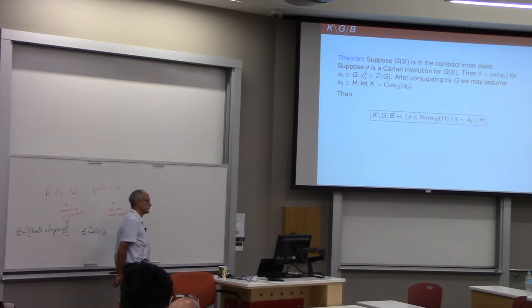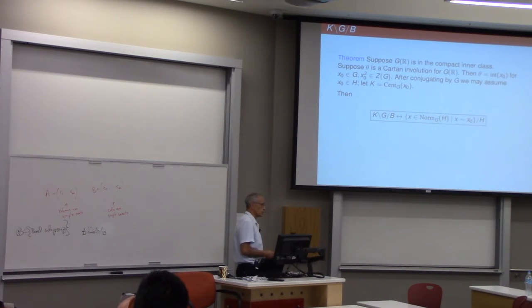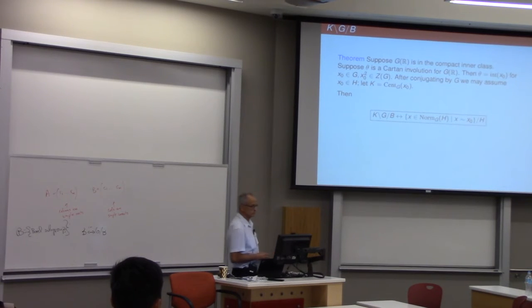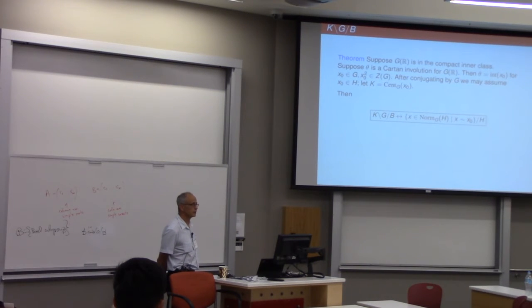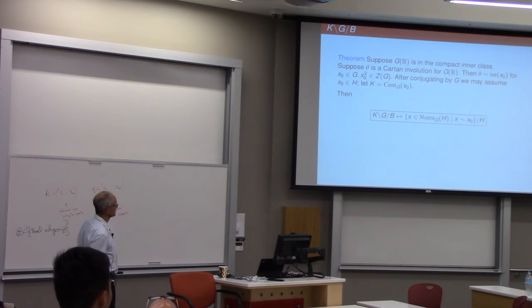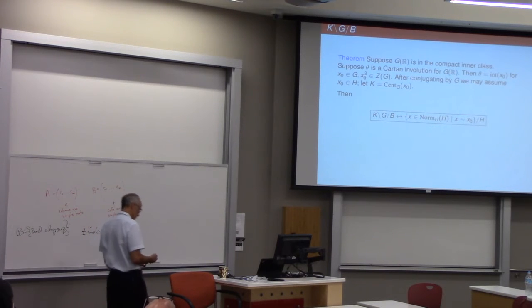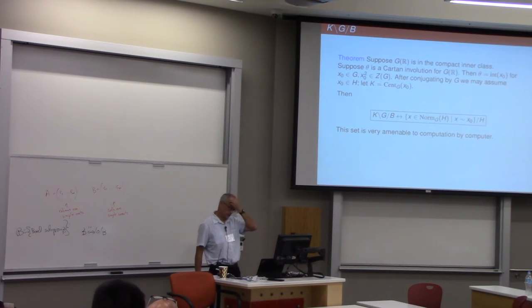So that's just that theta is inner. Theta is an inner automorphism. Sorry, what's the question? How do you fix K and H? Yes. Now you're saying that you're allowed to conjugate within. Yes. No, that's okay. It's a good question, but it's okay. All right. So this set is very computable.